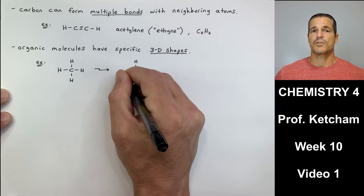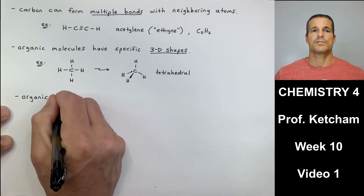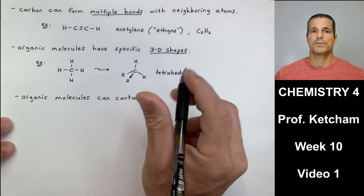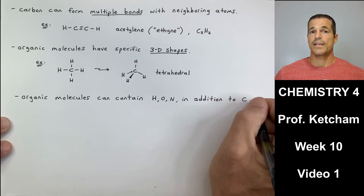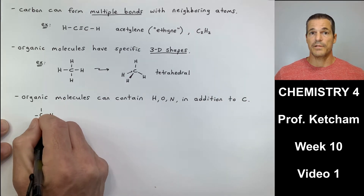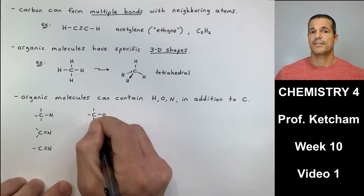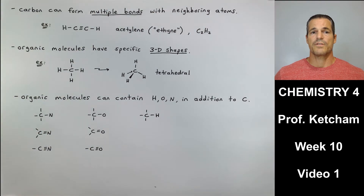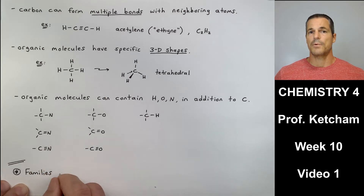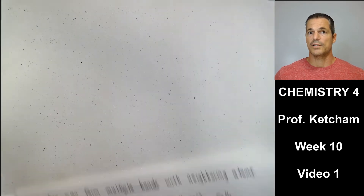Organic molecules have specific three-dimensional shapes. A few chapters ago we learned about tetrahedral geometries — CH4 has a tetrahedral arrangement of atoms around the central carbon. Organic molecules contain almost exclusively carbon and hydrogen when talking about alkanes and alkenes, but they can also contain oxygen, nitrogen, and the halogens. You can have C single bond N, double bond N, triple bond N, and C single bond O, double bond O, triple bond O, and so on.